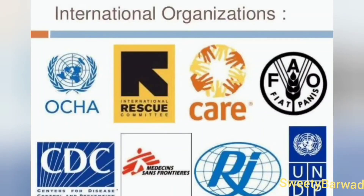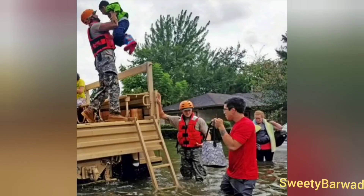Other agencies that help people affected by natural calamities are the police, the navy, and the air force. The police work to save people, protect their property, and help them reach relief camps safely. The navy brings its boats and the air force uses its helicopters to rescue people and drop food, water, medicines, and other necessary items in the affected areas.